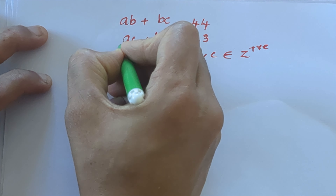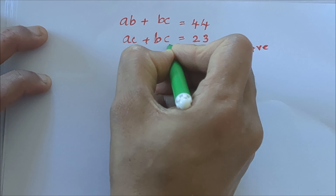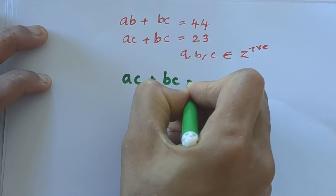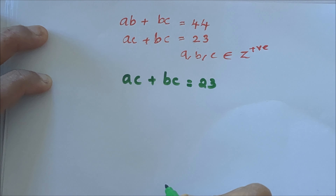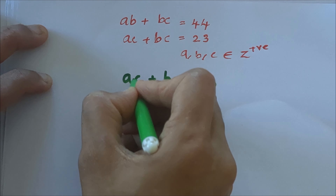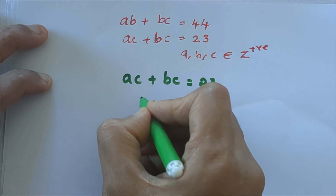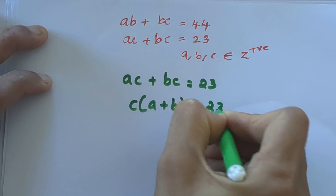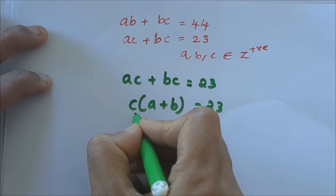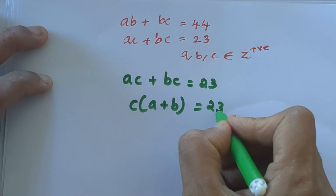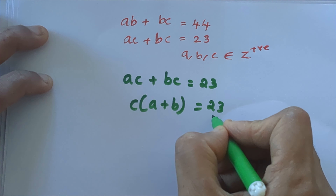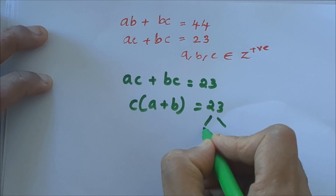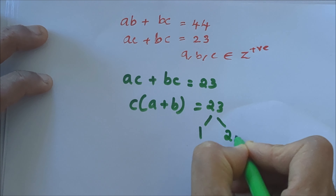Let's start with the equation ac plus bc equal to 23. C is common here, so we can take c outside: c into (a plus b) equals 23. That means the factors of 23 — since 23 is a prime number — it has only factors 1 and 23.